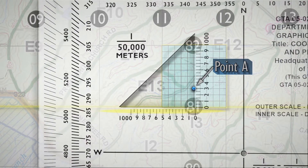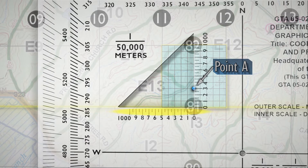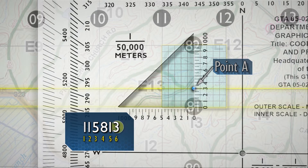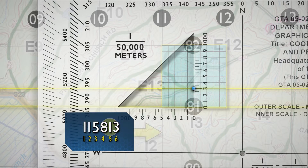To determine the six-digit coordinate, look at the 100-meter mark on the bottom scale which is nearest the vertical grid line. This mark is the third digit of the number 115. The 100-meter mark on the vertical scale nearest to point alpha gives you the sixth digit of the number 813. The complete grid coordinate is 115,813. Always read right and then up.